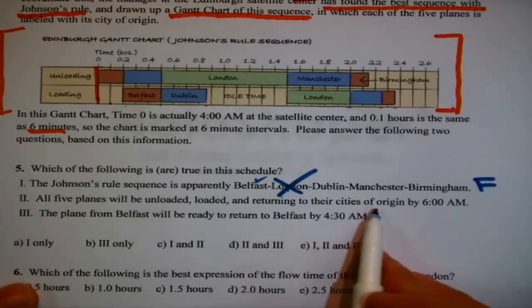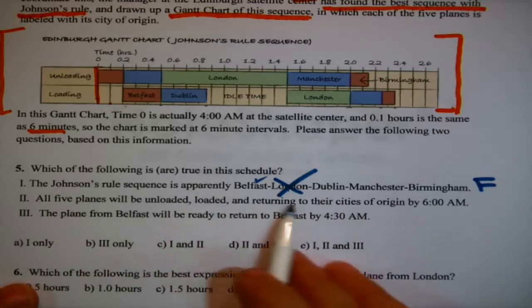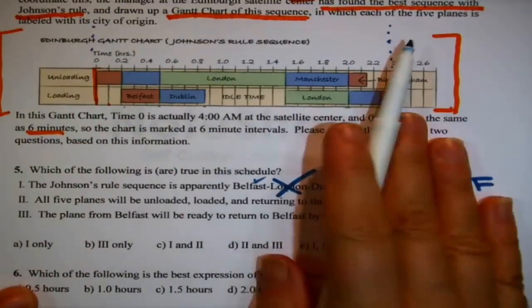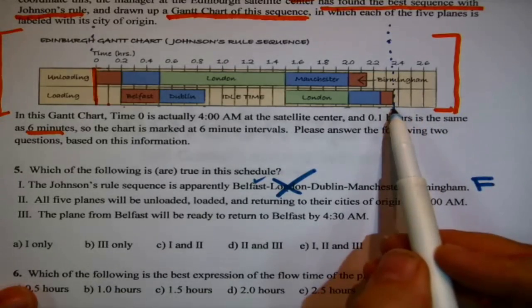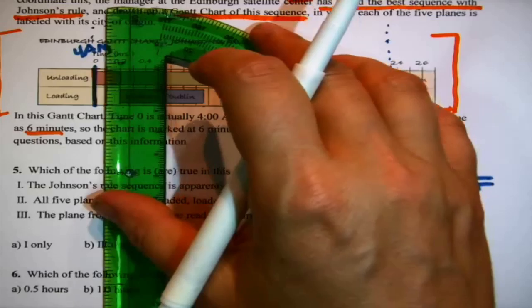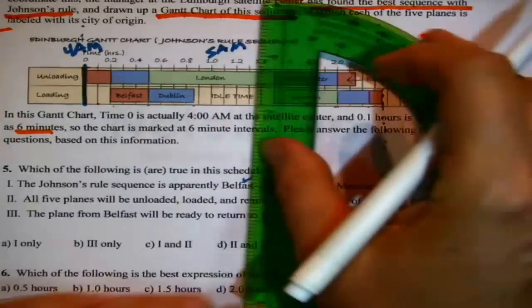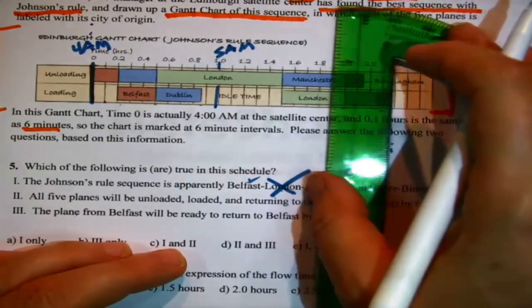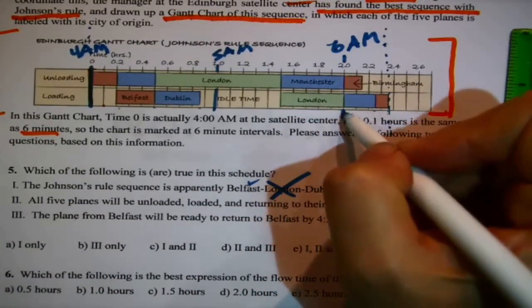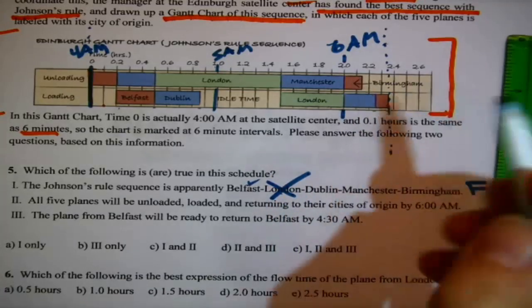All five planes will be unloaded, loaded, and returning to their cities of origin by 6am. All five planes will be loaded and unloaded whenever we get to right here on the Gantt chart. This is just a question of, do you know how to interpret a Gantt chart? Because this is apparently the make span of the schedule. It's how much time passes before everything is done. Now, the question is, is that 6am? Well, we know that this is 4am, right here, because it said so. And that each one of these columns is one-tenth of an hour, which is the same thing as six minutes. But wait a minute, that means that if this is 4am, look for the whole numbers. One hour later, it's 5am. And then, two hours later from 4am, it's 6am. 6am is right here, and you can see that we're still not done yet, because we haven't loaded the Manchester flight, or even done anything with the Birmingham flight, so that flunks. It's false.